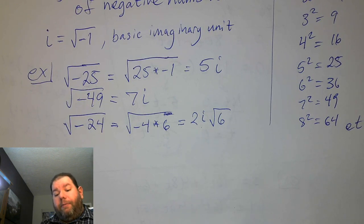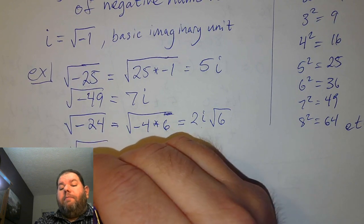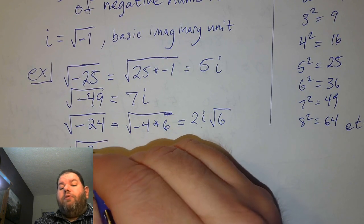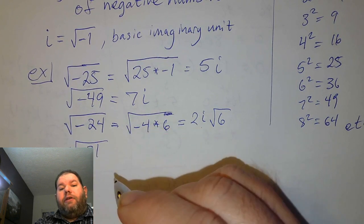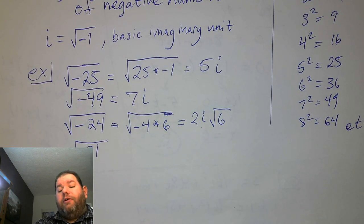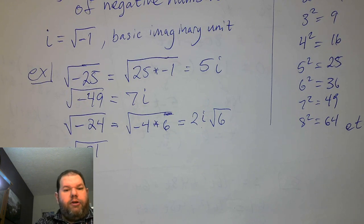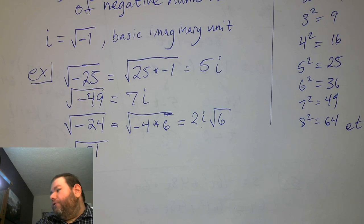A number that came up when we were looking at the earlier homework problem was the square root of negative 31. In the previous section we said we didn't want to worry about it — we just said there was no real solution.